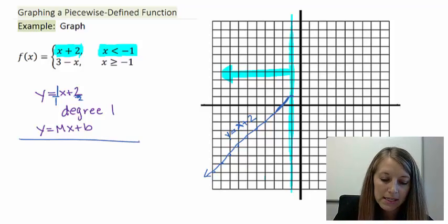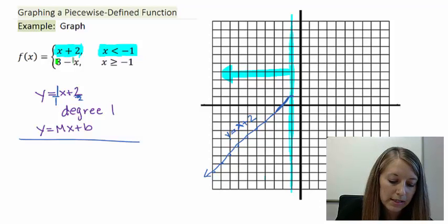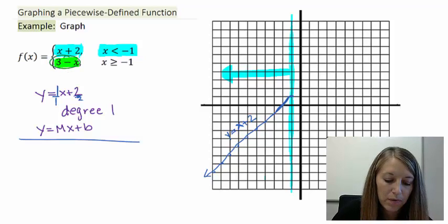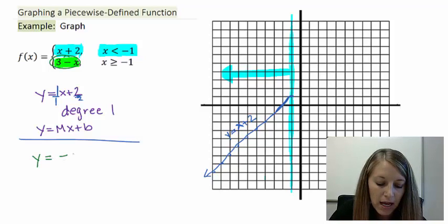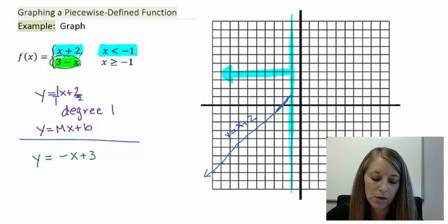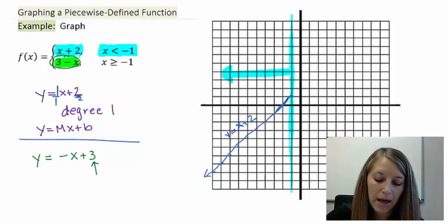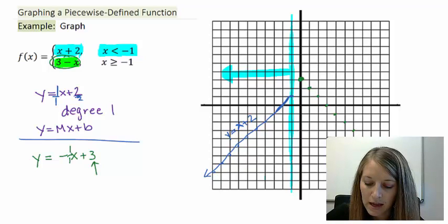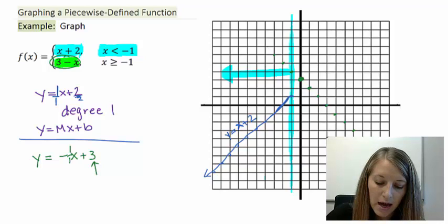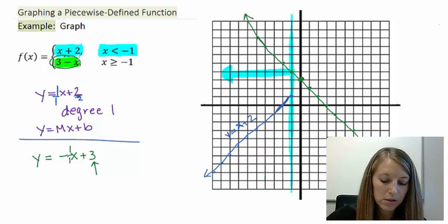Now I'm going to graph my second piece in green. The second piece is 3 minus x. This is also a degree 1 or linear equation. If I rewrite it in typical order as negative x plus 3, I can identify the y-intercept and slope. My b value is 3, so I plot my y-intercept at 3. My slope is negative 1, or negative 1 over 1, so I go down 1, right 1 as many times as needed — or up 1, left 1 in the other direction. Connecting all those points gives me the graph of y equals 3 minus x.